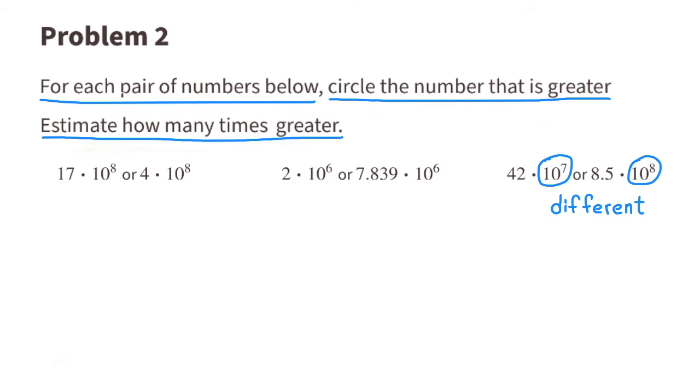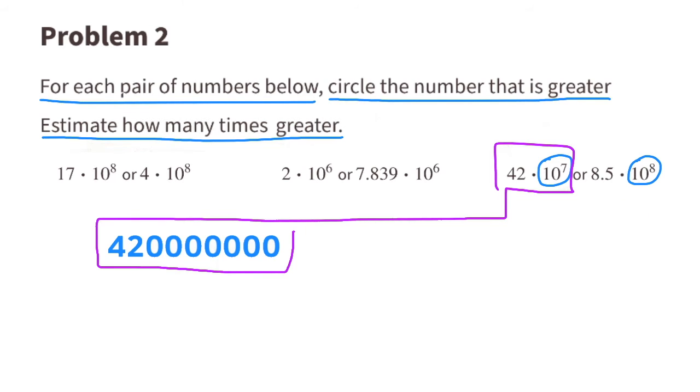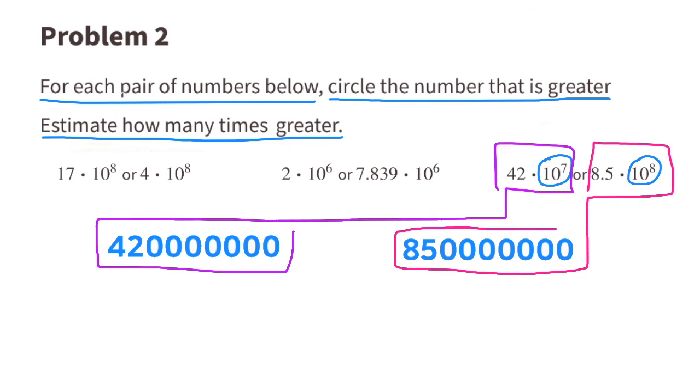The last pair of numbers are being multiplied by a different power of 10. 42 times 10 to the power of 7, we'll just put 7 zeros to the right of 42. And 8.5 times 10 to the power of 8, we'll move the decimal point 8 places to the right. So counting the 5, that would be 1, and then 7 zeros for a total of 8.